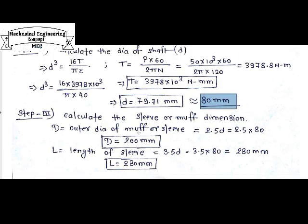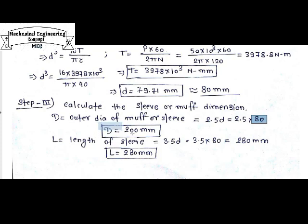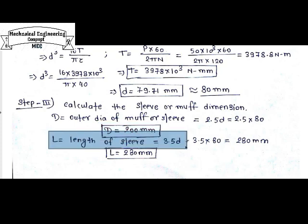After calculating the shaft diameter, we calculate the sleeve dimensions. Capital D is the outer diameter of the sleeve and small d is the inner diameter, which equals the shaft diameter. The outer diameter D = 2.5 × d = 2.5 × 80 = 200 mm. The length of the sleeve L = 3.5 × d = 3.5 × 80 = 280 mm.